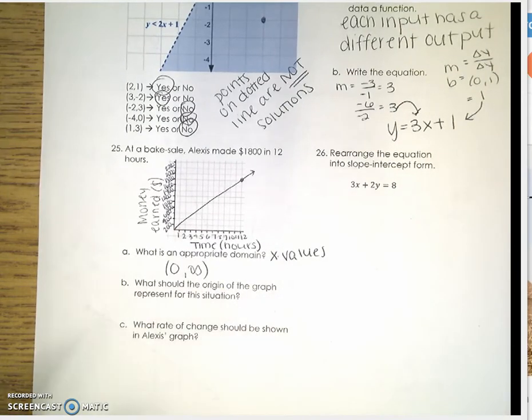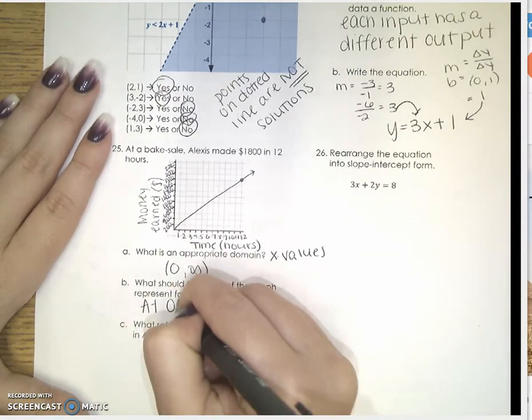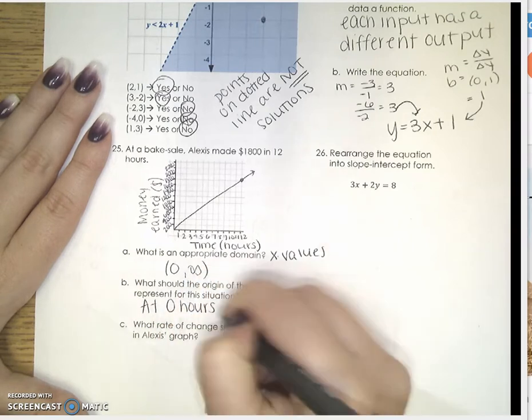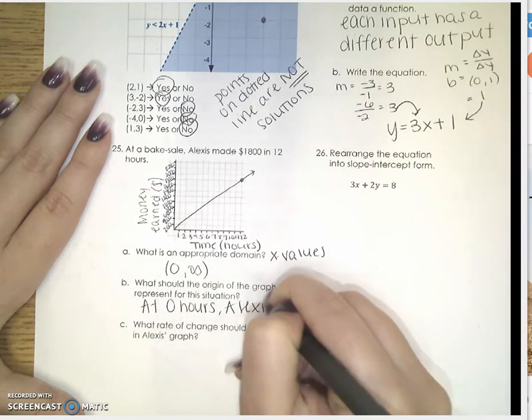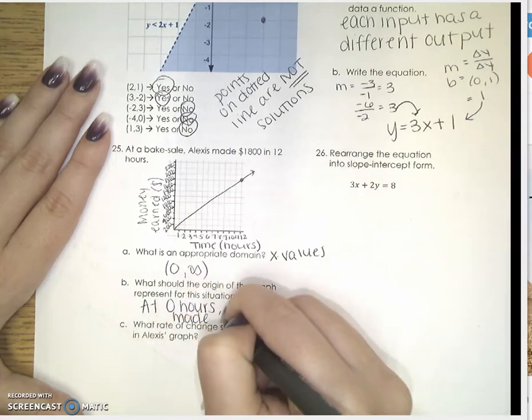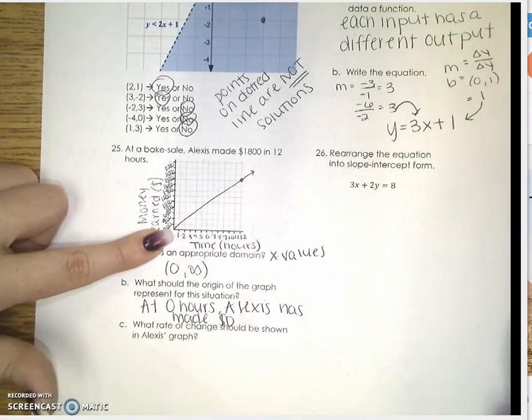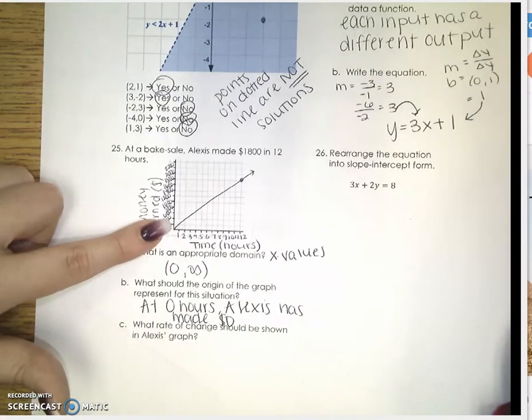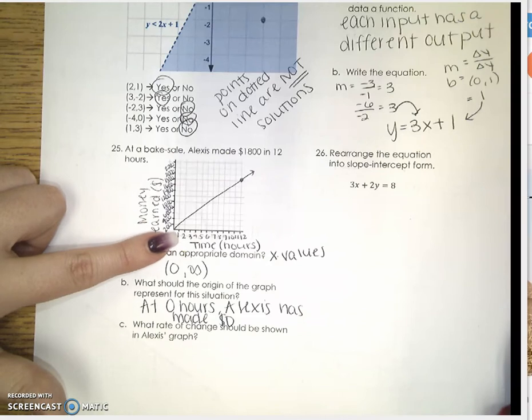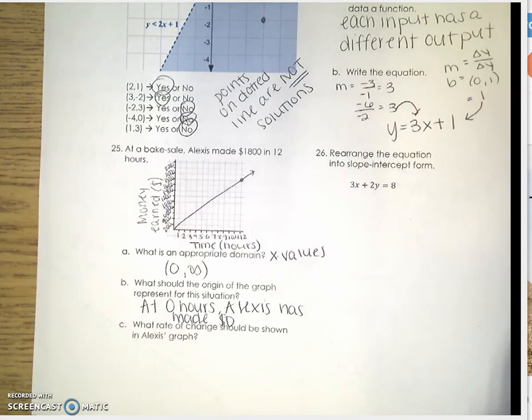What should the origin of the graph represent for this situation? So the origin would represent at 0 hours, Alexis has made $0. So it makes sense. She hasn't started selling anything, so how could she make any money? So here, she hasn't sold anything, so she makes $0. Once she starts selling is when her profit increases.